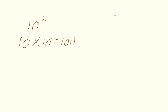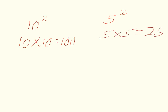If you had 5 squared, all it's telling you to do — this squared is saying that you need to do 5 times 5. So you get 5 times 5, which is equal to 25. So 5 squared is the same as 25.